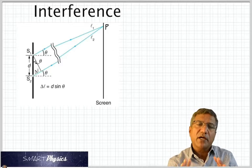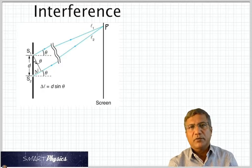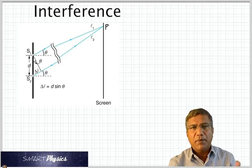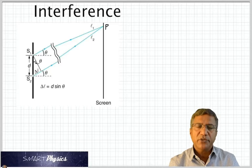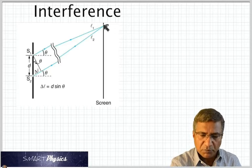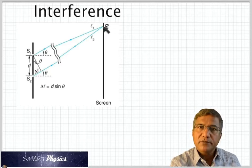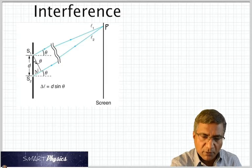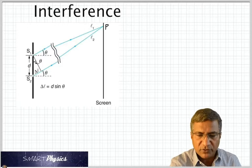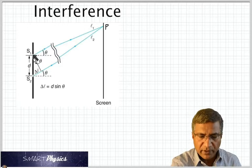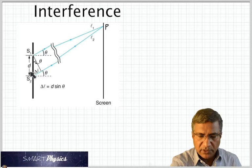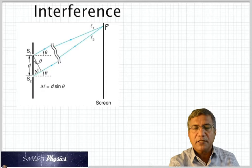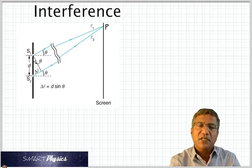So we're trying to find out the conditions for bright and dark bands. In order to do that, we pick a certain point on the screen, that's P. And when we look at the paths that the waves have to take, the path from S1 to P is shorter than the path from S2 to P. That means there is a path difference.